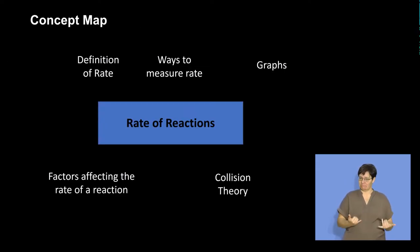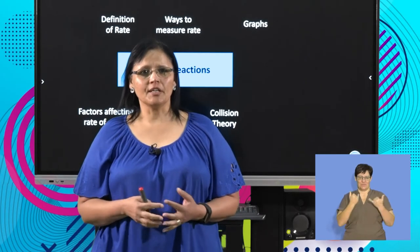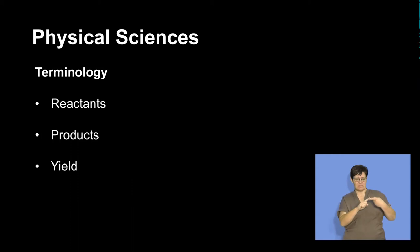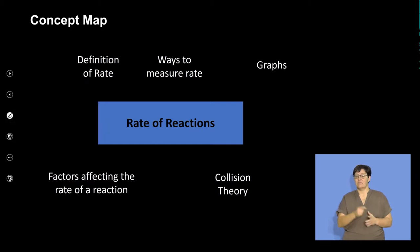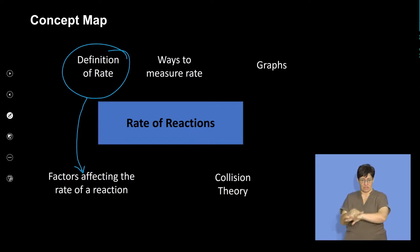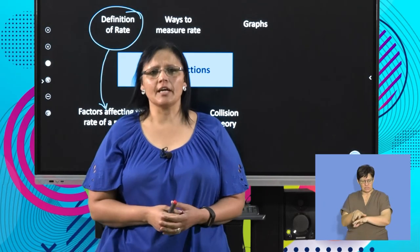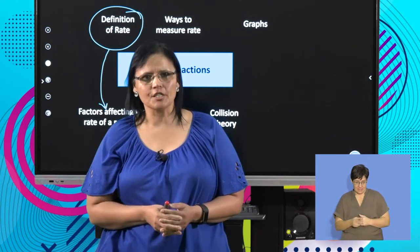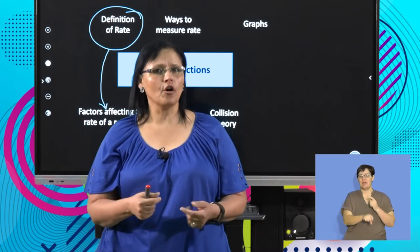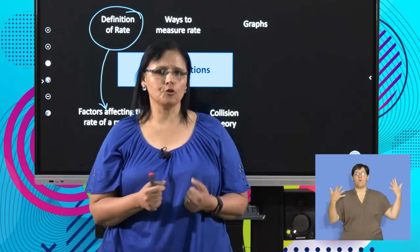I'm going to take you through the concept map so you can see what we plan on doing during this lesson. Firstly, I would like to look at the definition of rate of reaction, and then we will link that definition to the factors affecting the chemical reaction. Some reactions take longer and some are very short, and we will see how we can alter a reaction to make it faster or slower.